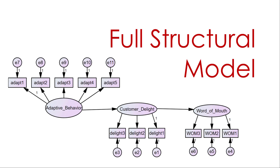The full structural model is a better alternative than a path model. It includes not only the measurement properties within each construct but also the paths across constructs. So we're assessing all measurement properties of adaptive behavior and the error terms within each item, while also assessing relationships across constructs — adaptive behavior leading to customer delight and word-of-mouth. You'll explain way more variance because you're accounting for error in the measurement items. It's by far the most optimal way to run a model in SEM, though a little more laborious than a path model.